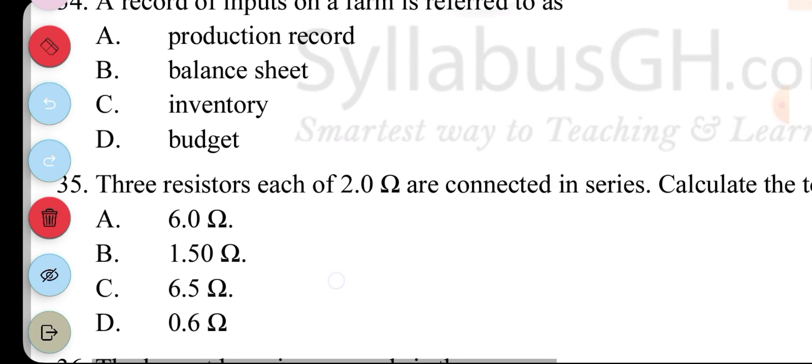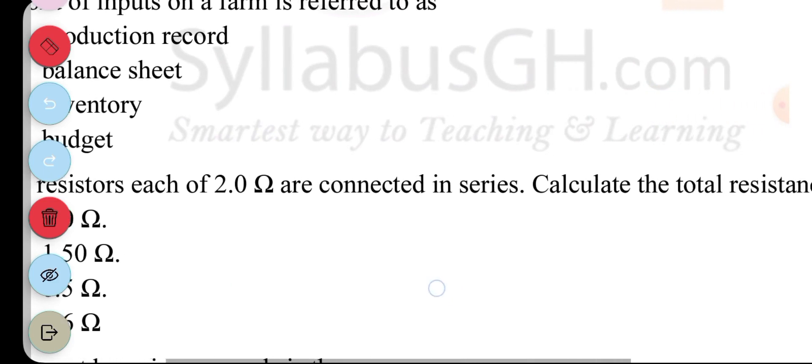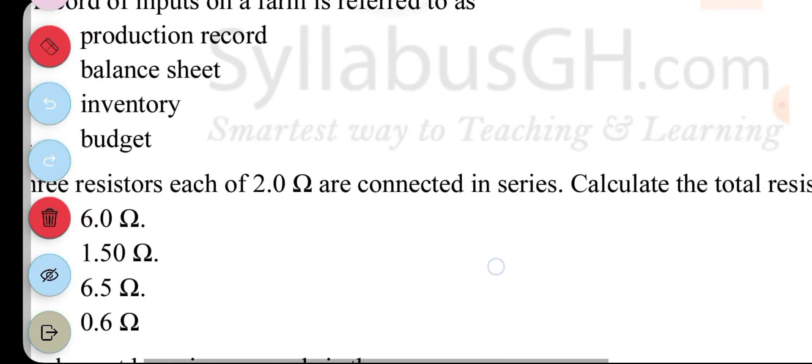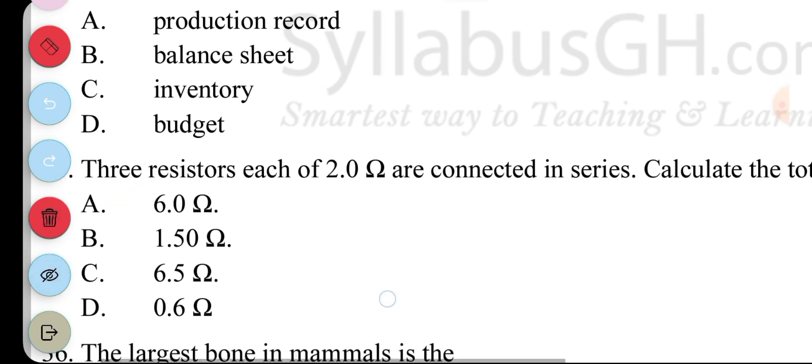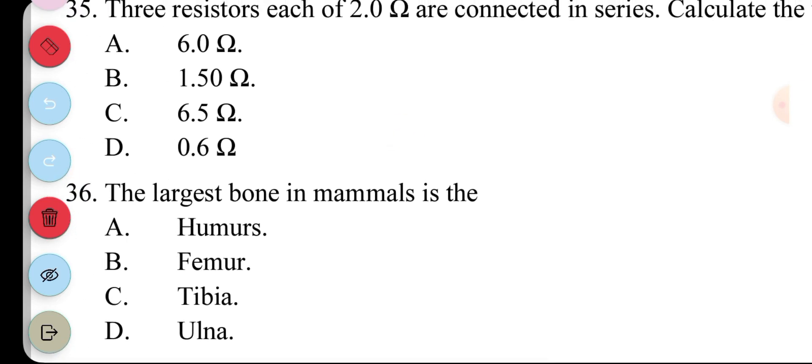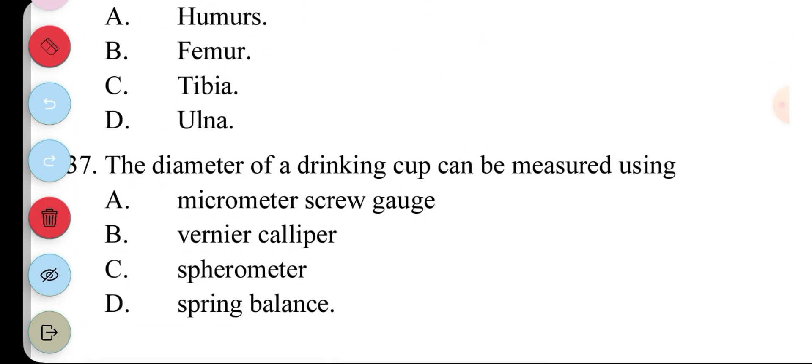35. Three resistors... Each of two ohms are connected in series. Calculate the total resistance of the circuit. A. 6 ohms. B. 1.50 ohms. C. 6.5 ohms. D. 0.6 ohms. Now, when resistors are connected in series, they are added. You add them. So, you have three here. So, 2 multiplied by 3. You have 6. So, 6 ohms. 36. The largest bone in a mouse is the... Is a femur. B. 37. The diameter of a drinking cup can be measured using... A. Micrometer screw gauge. B. Vernier caliper. C. Spherometer. D. Spring balance. The answer to question 37 is... B. Vernier caliper.